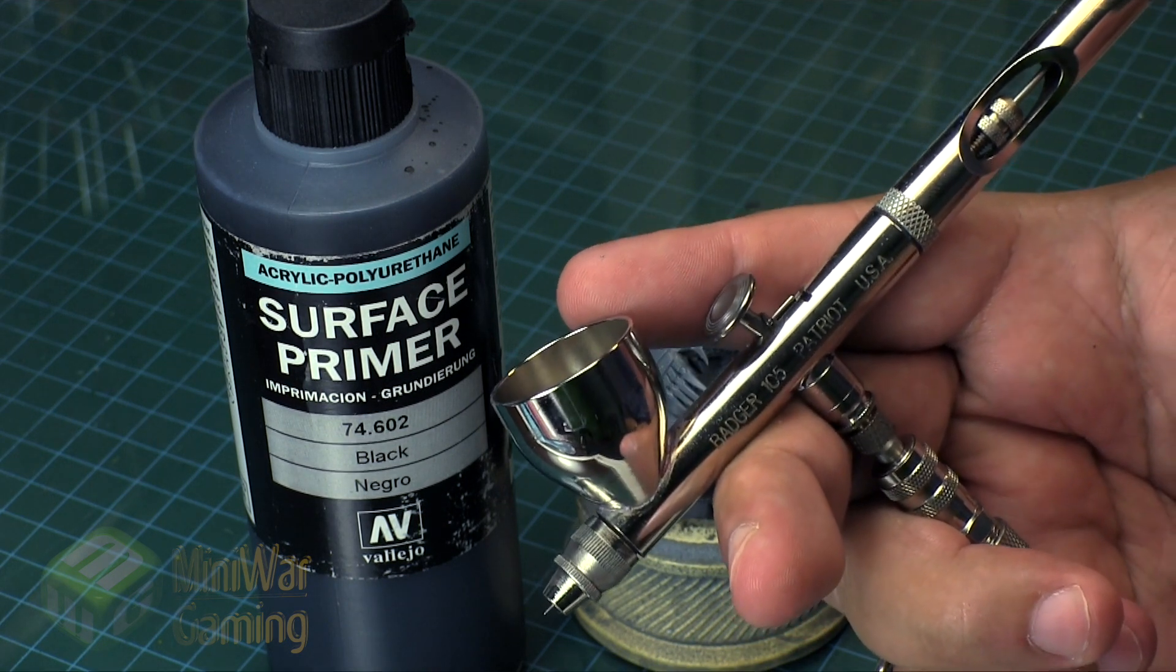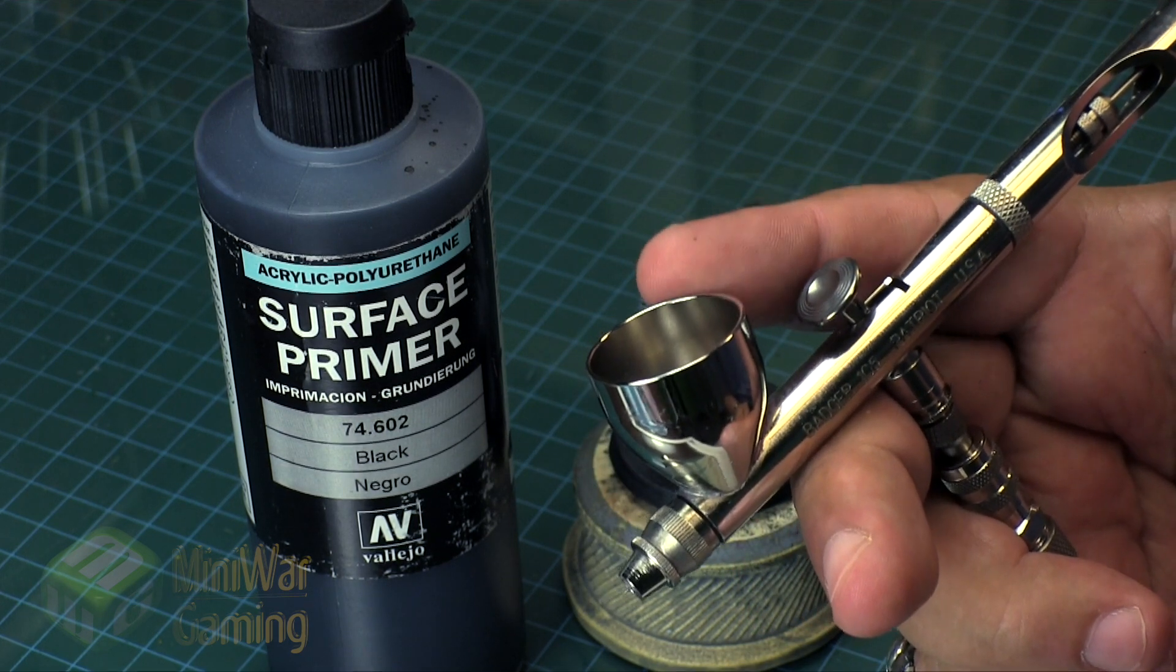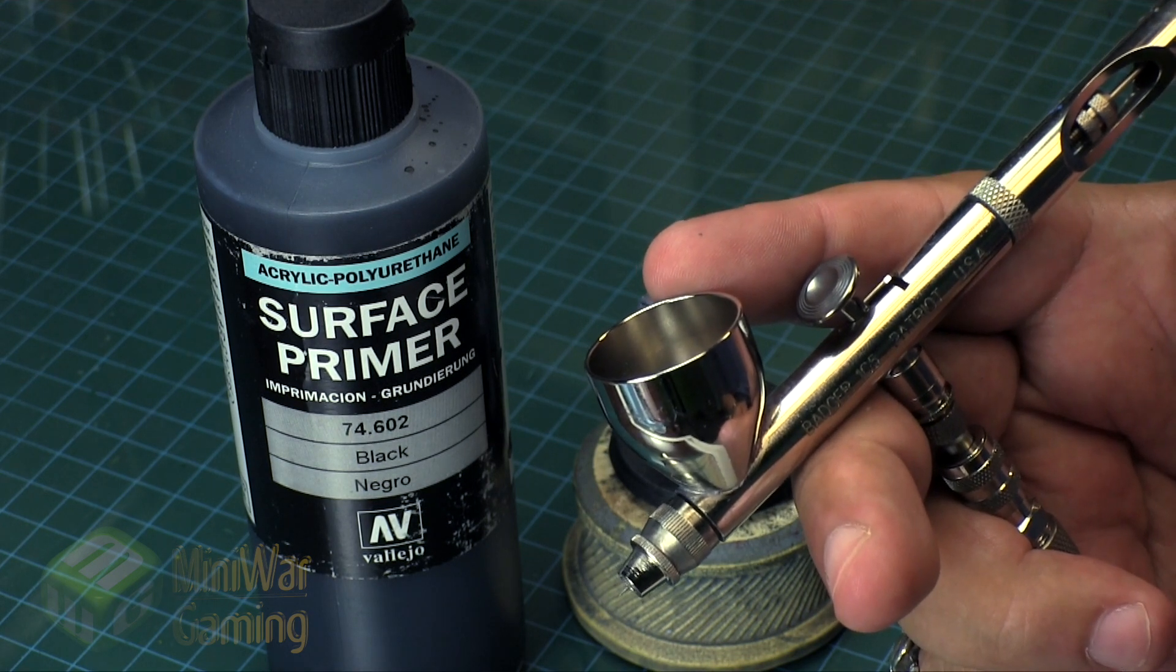If you got like a whole bunch of models to be doing, if you're gonna be priming models, obviously you want to have a large cup so that you can handle doing five, ten, twenty models at once.